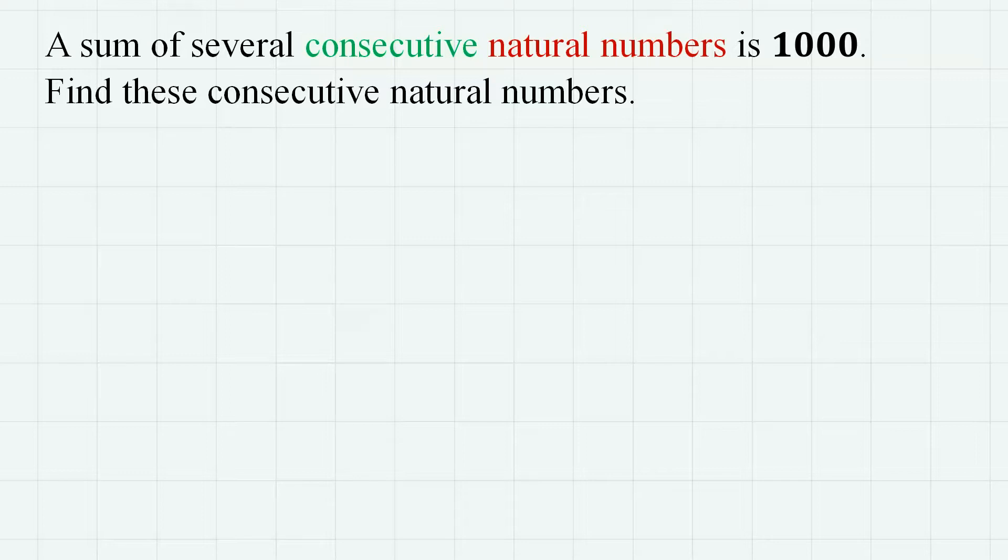Specifically, the sum of consecutive natural numbers, which is one of the most basic sequences. So the problem says a sum of several consecutive natural numbers is 1000. Find these consecutive natural numbers. For example, number 10 can be expressed as the sum of consecutive natural numbers, which is 1 plus 2 plus 3 plus 4. This one is quite easy, but can you do it for 1000? There can be more than one expression, so let's find all of them.